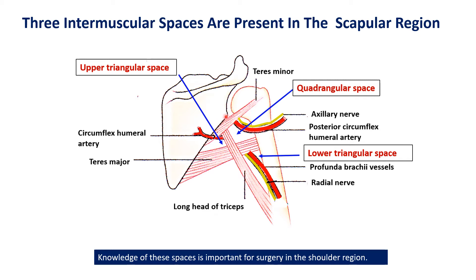There are three muscles involved in forming the boundaries of these three spaces: teres minor and teres major, which take origin from the lateral border of the scapula, and triceps, which takes origin from the infraglenoid tubercle at the upper end of the lateral border. The important contents of these spaces are either nerves and blood vessels or simply blood vessels. Knowledge of this region is clinically important during surgeries so that structures passing through these spaces are not injured.